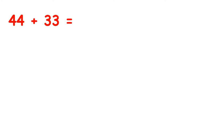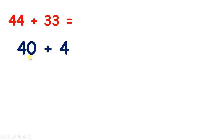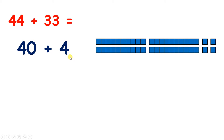In this lesson, we're going to add two-digit numbers by partitioning. So we have 44 plus 33. Now 44 can be partitioned as 40 plus 4, because if we have 44, then we have 4 tens, so 40, and 4 units, so 4.